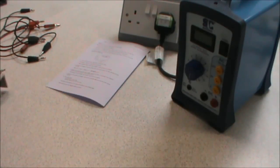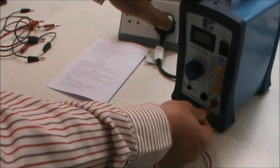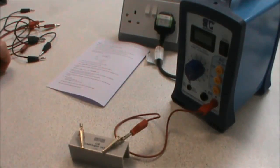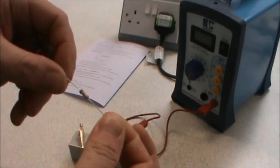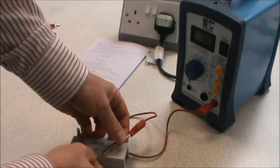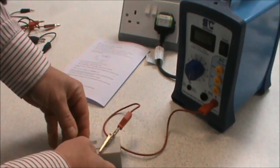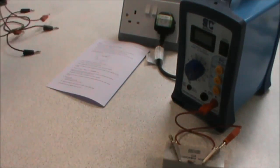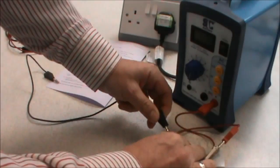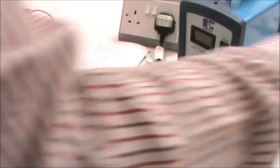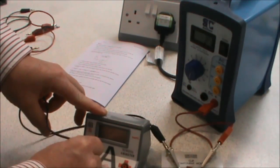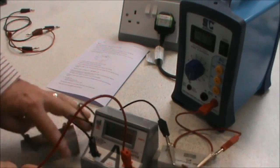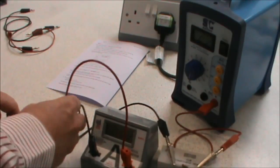Now we can connect up our circuit. We connect from our power supply to our resistor. I'm going to use a component holder here just to make it easier to keep the resistor in place. So there's our resistor, we then go from our resistor to our ammeter, from our ammeter to another component holder for our LED.